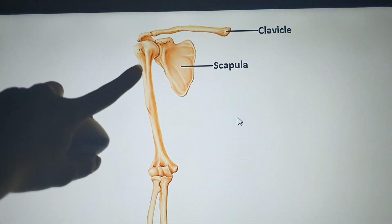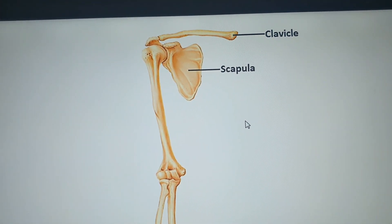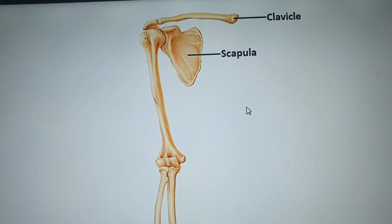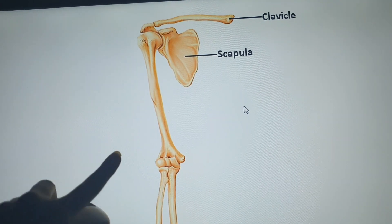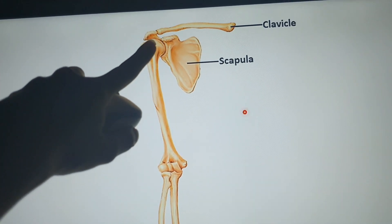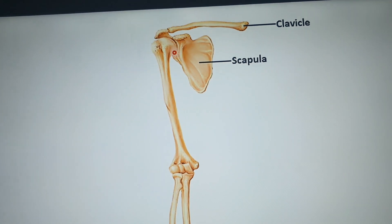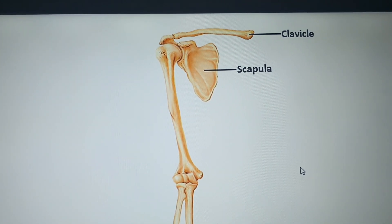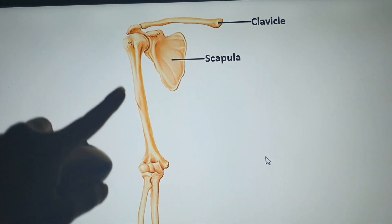The lateral angle of the scapula contains the glenoid cavity, which articulates with the head of the humerus.